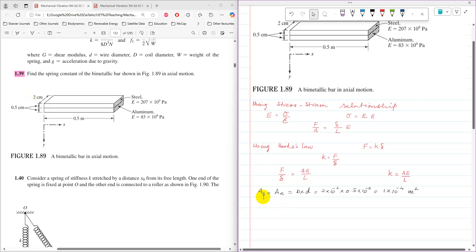The area of both steel and aluminum strips is B times D, which is 2 cm times 0.5 cm, giving 1.0 times 10 to the minus 4 square meters.